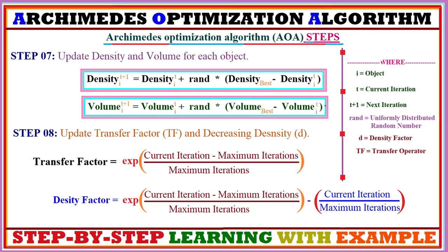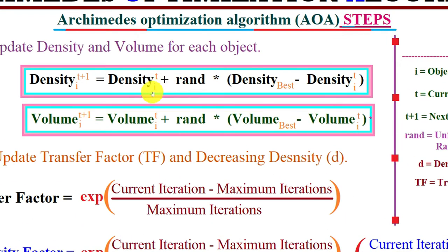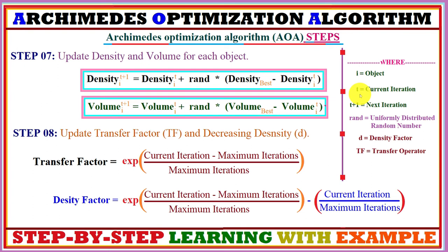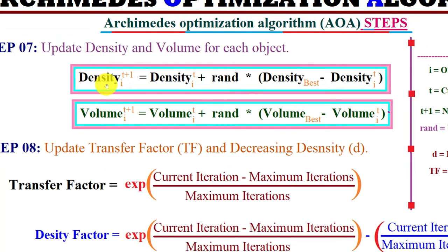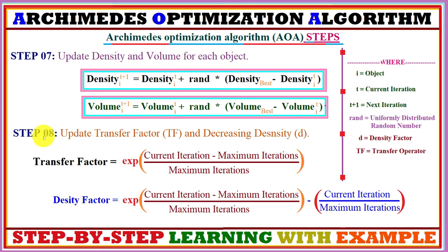In the next step, we update the density and volume for each object, as objects are moving in the search space. Using specific equations, we update the density and volume for each object, where t is the current iteration, i denotes the object, and we compute the new density and new volume to be used in the next iteration. The random value is normally distributed within zero and one, and we also use the best density and best volume.